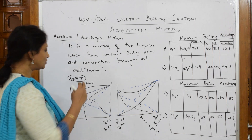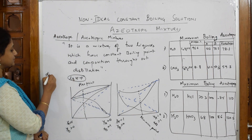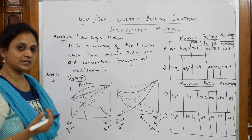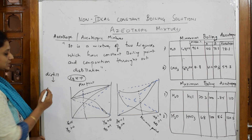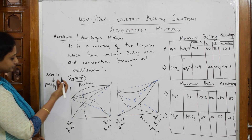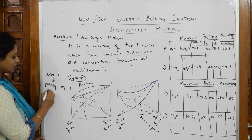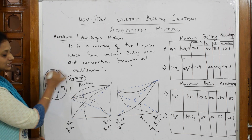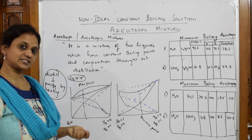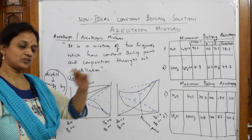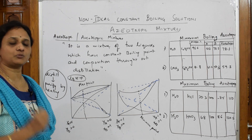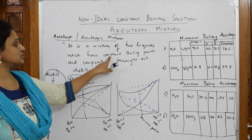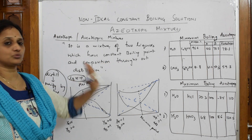Now what happens when you try to distill this liquid? Distillation is a process of purifying a liquid by heating. When you heat the liquid it converts to vapor, and on condensing those vapors you get a pure form of the liquid again. The composition does not change — they have a constant boiling point and composition throughout.